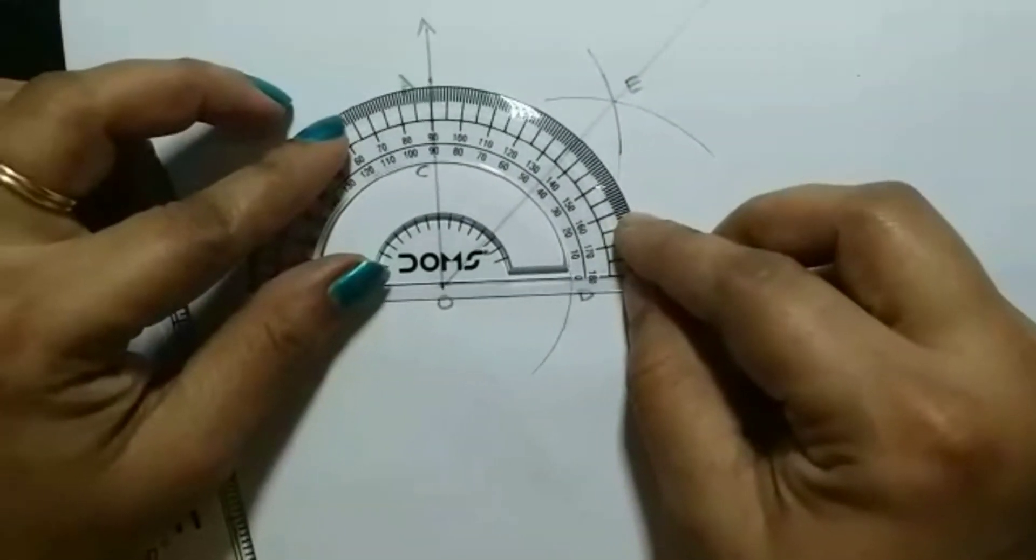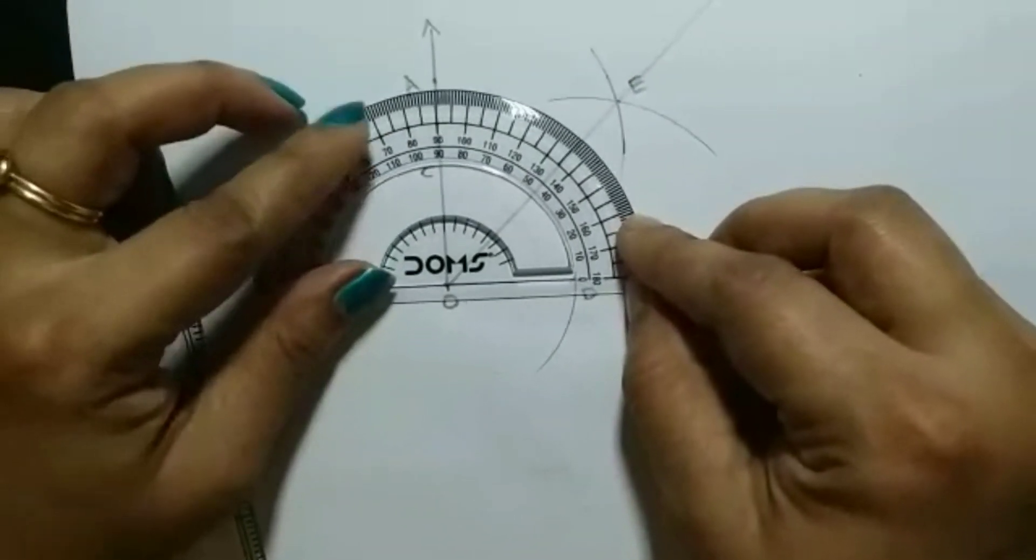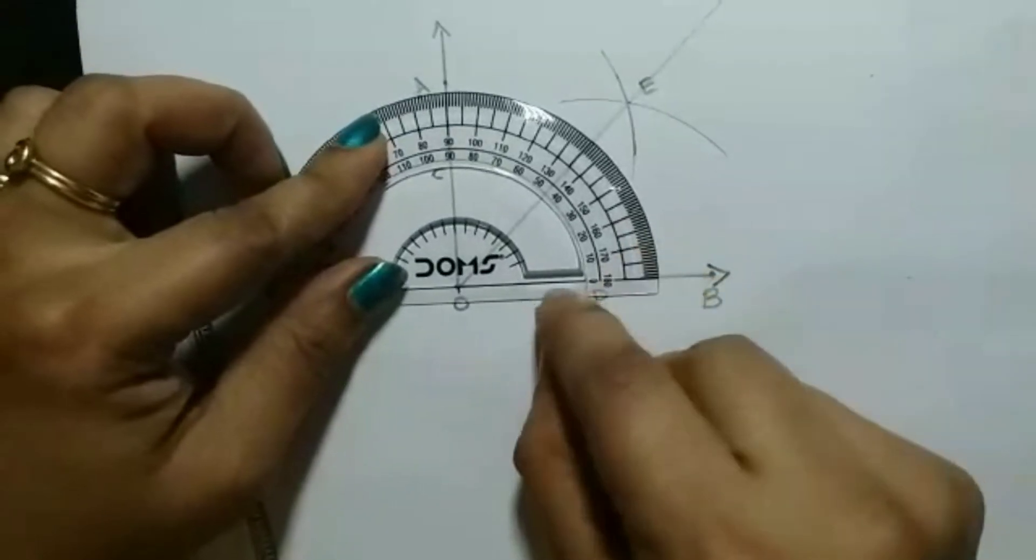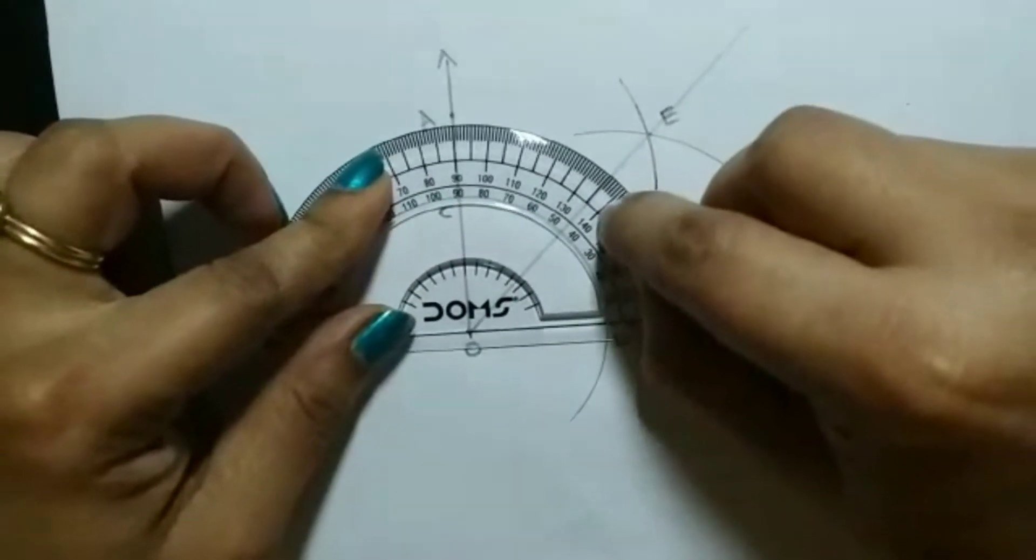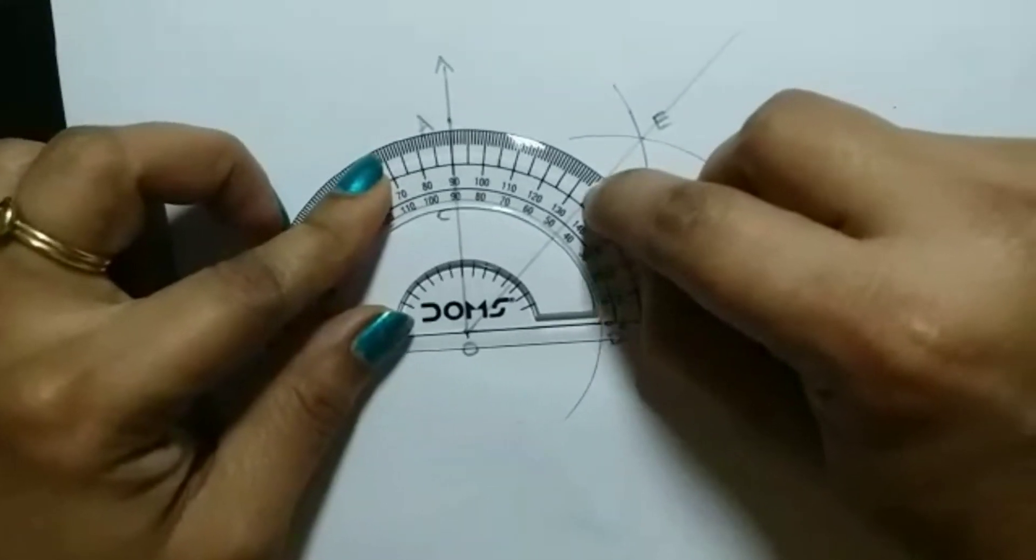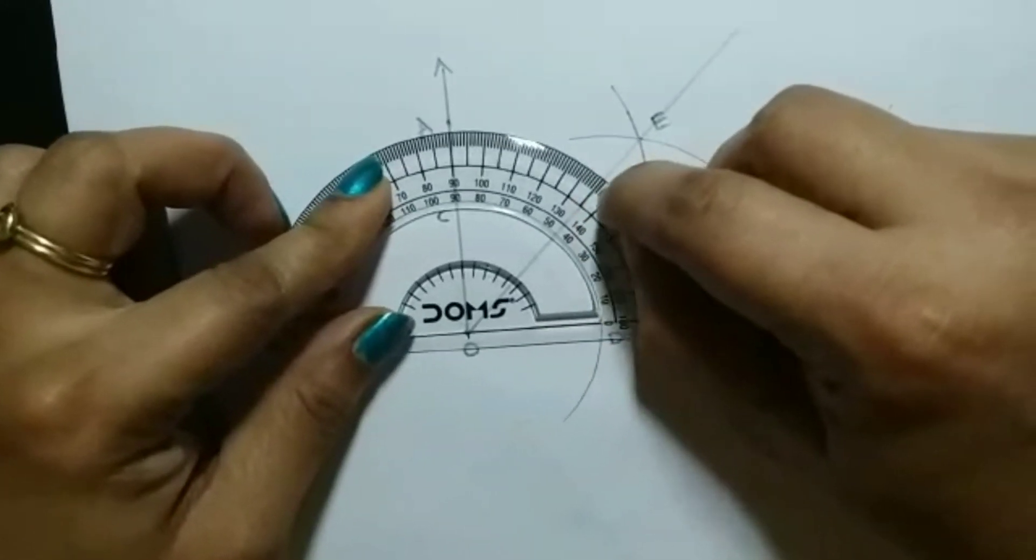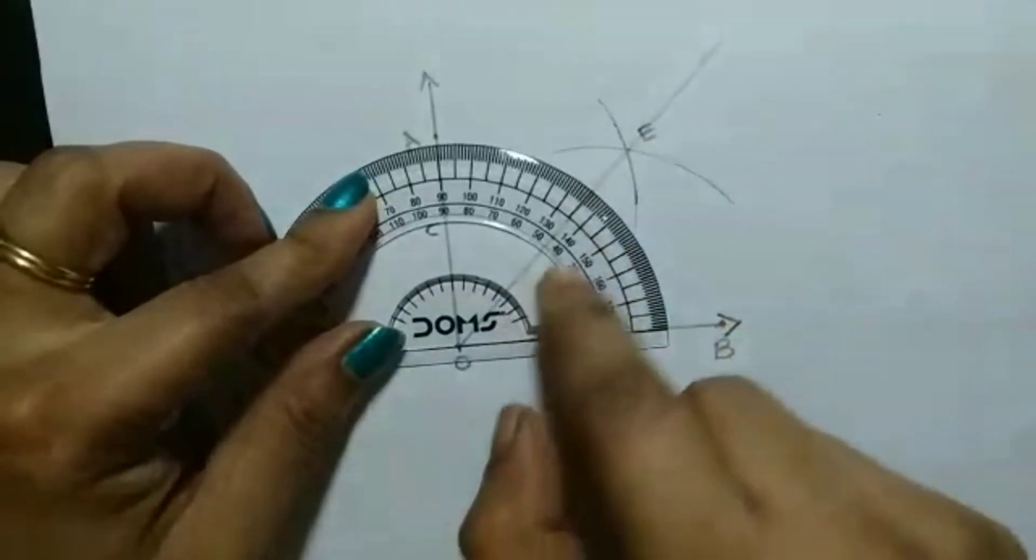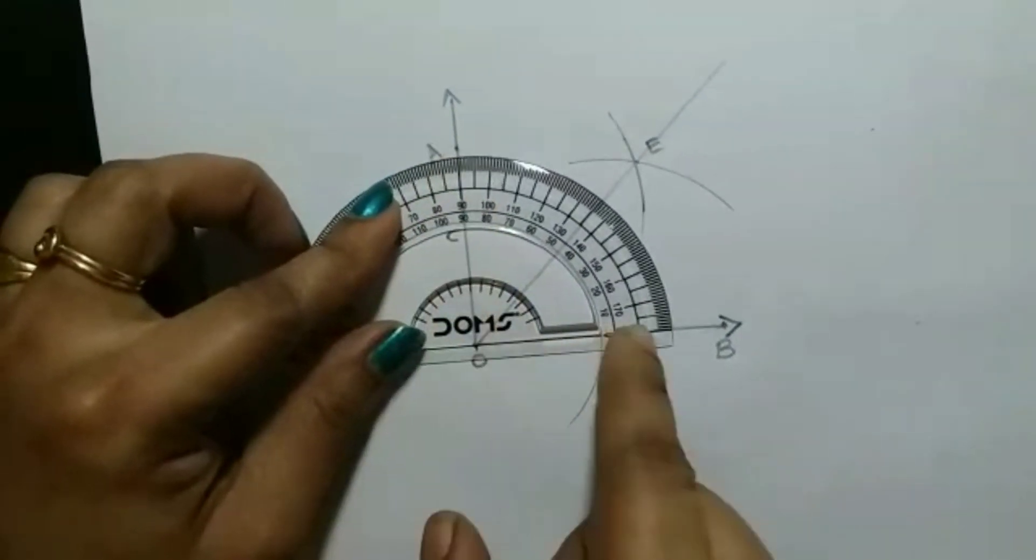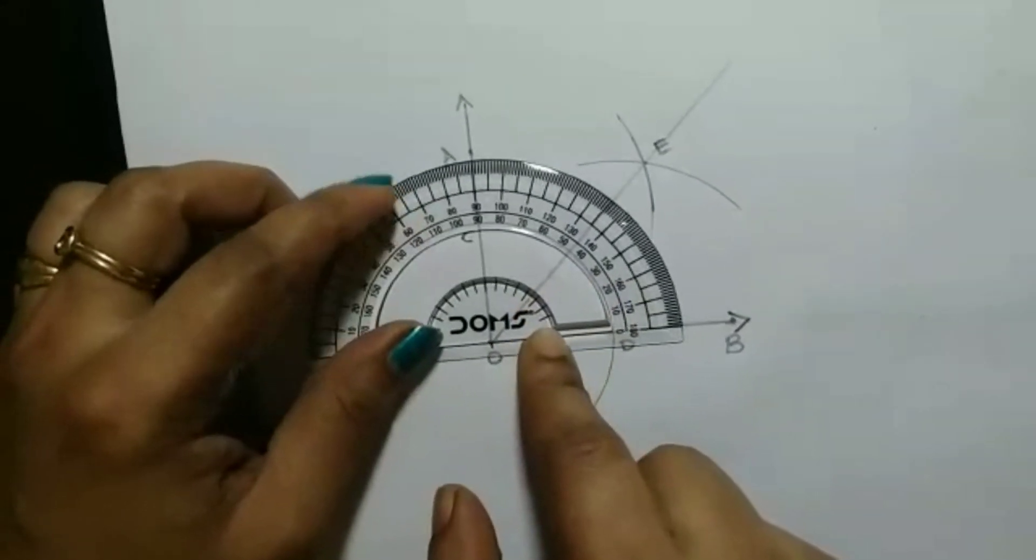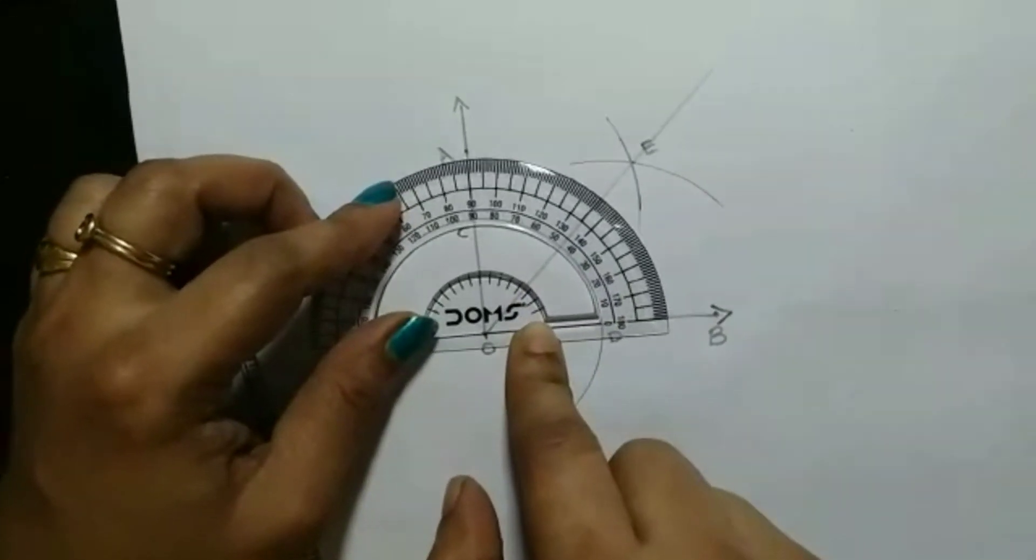Just see, this is 0 degree and here it is 45. This is the bigger one, then here this is another one, a smaller division. So here it is coming to 45 degrees. So this is 45 degrees and this is 45 degrees, which together makes 90 degrees. So we correctly bisected a 90 degree angle.